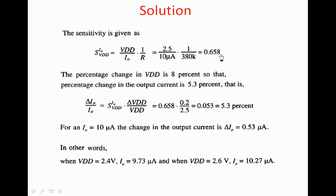Substituting all values — VDD = 2.5 V, I_out = 10 µA, R = 380 kΩ — the sensitivity S(I_out, VDD) = 0.658. This means if the percentage change in VDD is 8%, the percentage change in output current is 8 × 0.658 = 5.3%. More precisely: delta_I_out / I_out = 0.658 × (0.2 / 2.5) = 0.053, which is 5.3%.